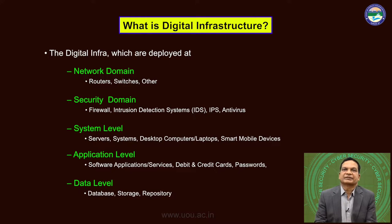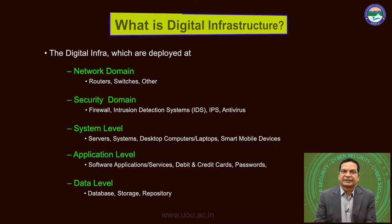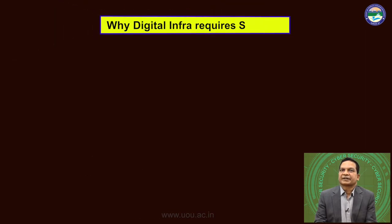The setup files and configuration files for all these devices also come under digital infra under the system domain. At the application domain, the software applications, software services, debit and credit cards, and many others come under digital infra under the application domain. Finally, at the data level — the data domain — the database, storage, and repository are also considered as digital infra under the data layer. Why does digital infrastructure require security?